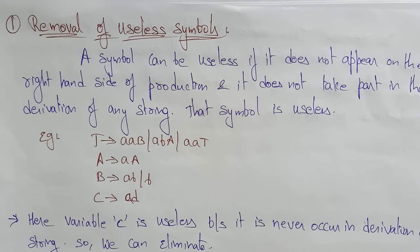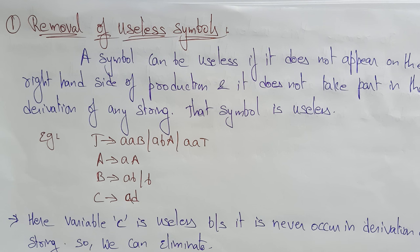Hi students, welcome back. Let's continue with reduced grammar, that is the simplification of context-free grammar. The simplification of context-free grammar can be done by three methods: removal of useless symbols, elimination of epsilon productions, and removal of unit productions. Let's see the first one — the removal of useless symbols.